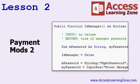In lesson two, we're continuing with our payment system modifications. We're going to talk about how to set your form with code to allow additions, edits, and deletions. We're going to take the manager password and make it a global public function. And I'll show you how to globally search all of your code to make sure that you've covered all instances of something.